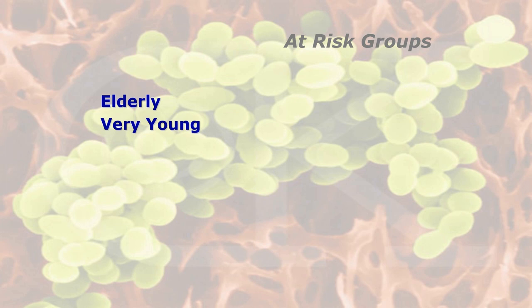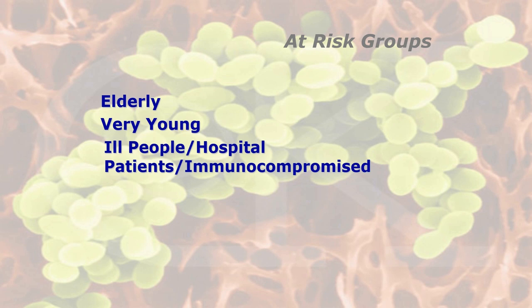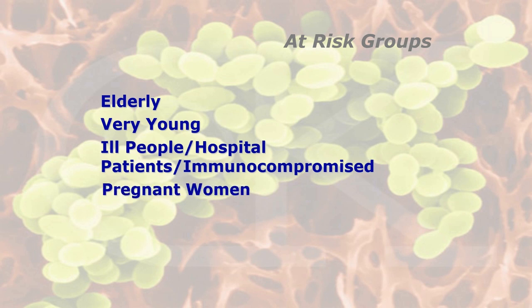Second, the very young — at the other end of the scale, they haven't yet developed a full immune system and their organs are still weak. Third, people who are already ill or hospital patients — immunocompromised individuals whose bodies are already fighting one disease will struggle to fight food poisoning as well. Hospital patients are at a low ebb with higher stress levels. Fourth, people with compromised immune systems — from diseases such as AIDS, drug therapies, or immunosuppressant drugs after an organ transplant.